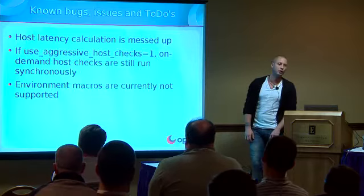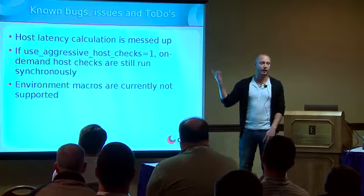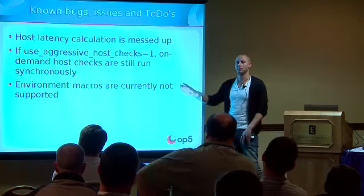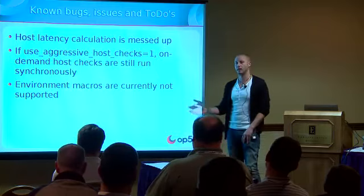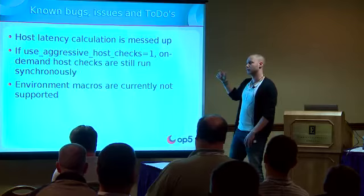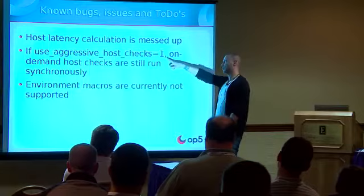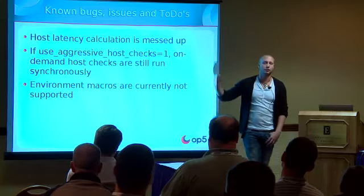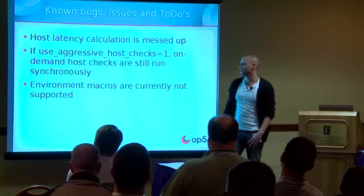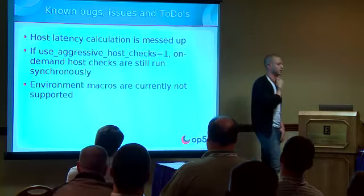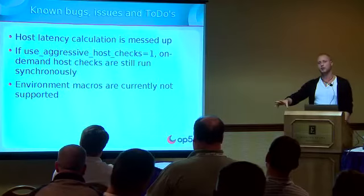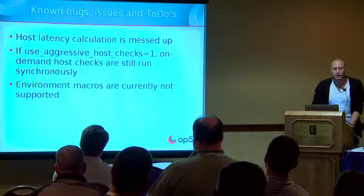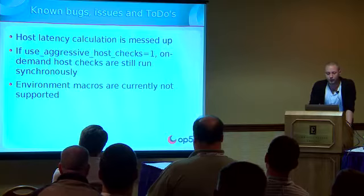Known bugs: host latency calculation is messed up - average host latency returns ridiculous numbers, possibly because hosts get scheduled more than once. If you use aggressive host checks, on-demand host checks are still run synchronously in serial fashion. Environment macros are currently not supported in the workers - to be added tomorrow. They need to be transferred to the worker and handled there; it's not difficult but not done yet. Also not a great idea to use environment macros anyway as they take a lot of CPU time to compute.